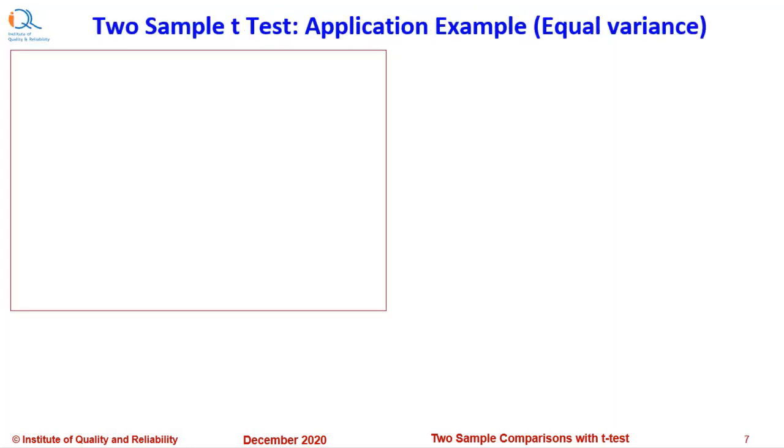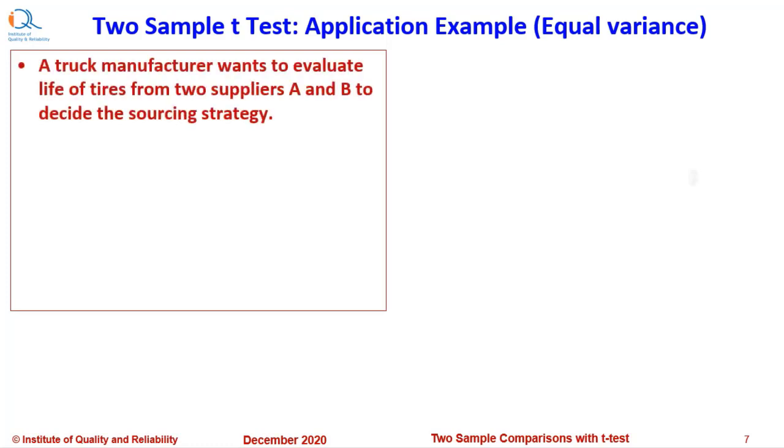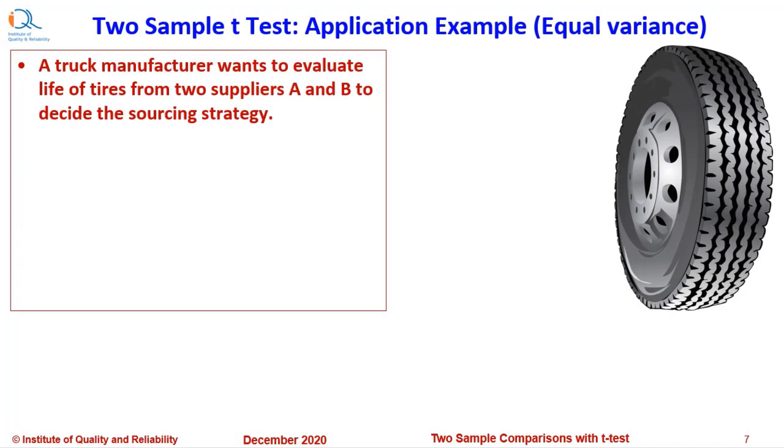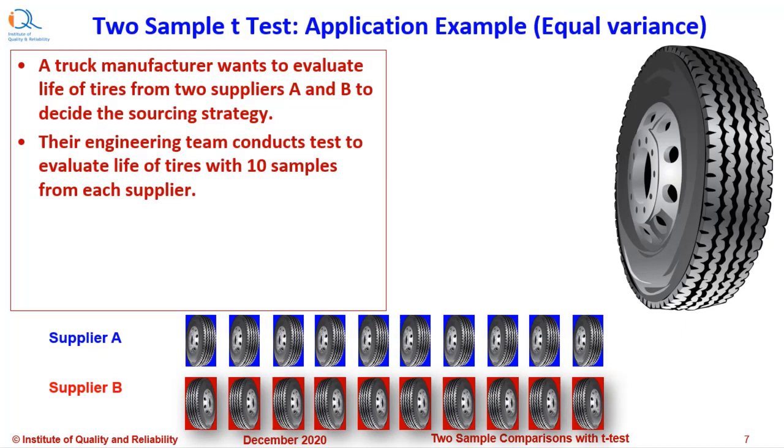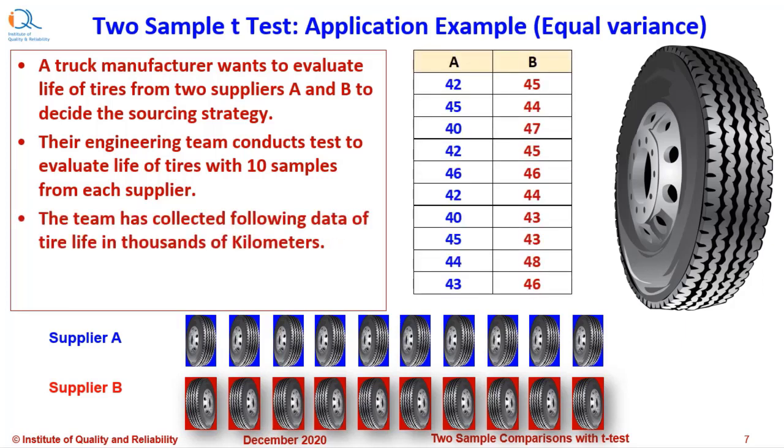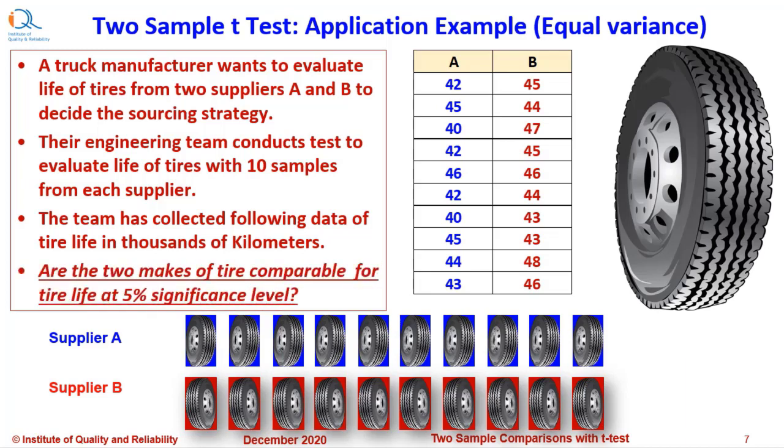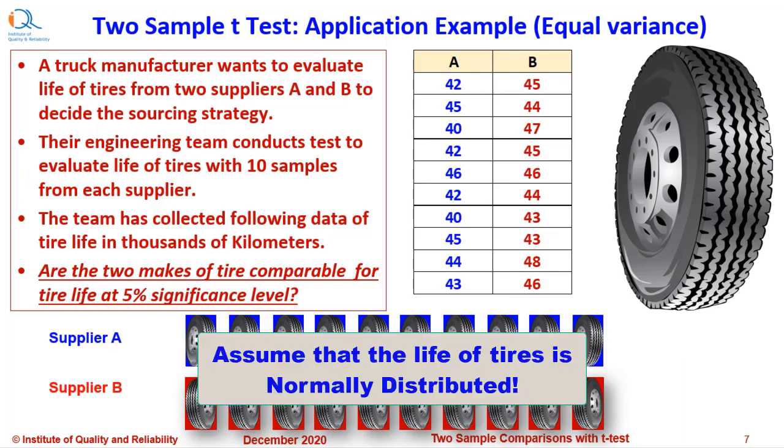We will now illustrate the procedure to perform two sample t-test with an application example. A truck manufacturer wants to evaluate life of tires from two suppliers A and B to decide the sourcing strategy. Their engineering team conducts tests to evaluate life of tires with 10 samples from each supplier. The team has collected following data of tire life in thousands of kilometers. Are the two makes of tires comparable for the life at 5% significance level? Assume that the life of tires is normally distributed.